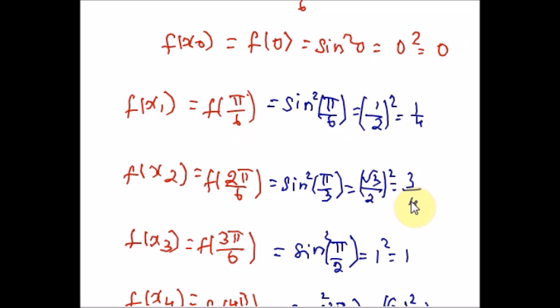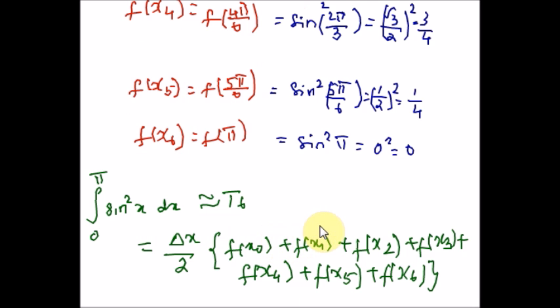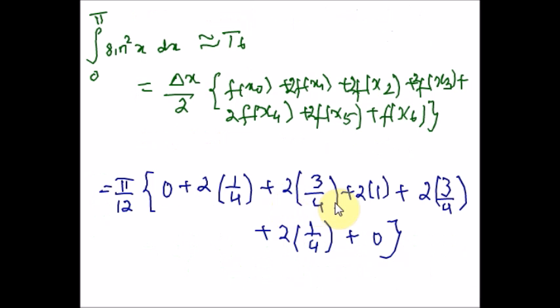Now we are just going to plug in all the values we got one by one. In the place of Δx/2, plug in π/12. You have to multiply these and add them. By doing the algebraic calculation, I am getting π/12 times the sum. If I combine all these and simplify, I get π/2.